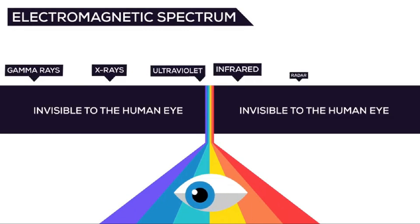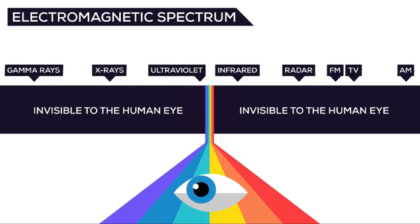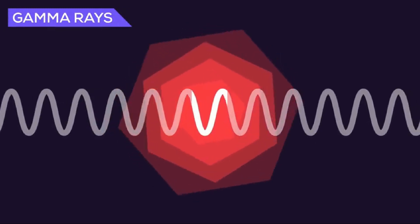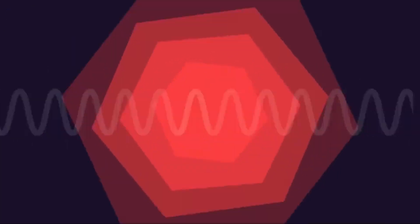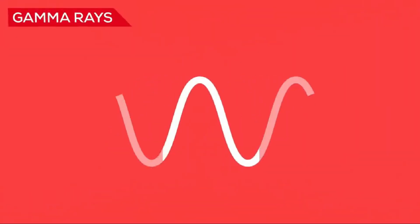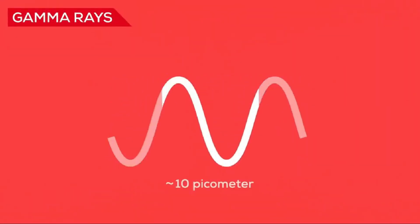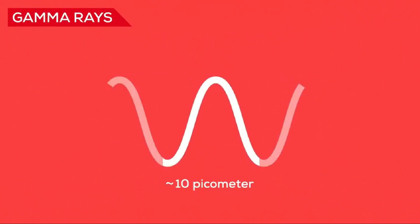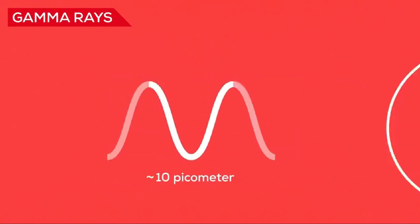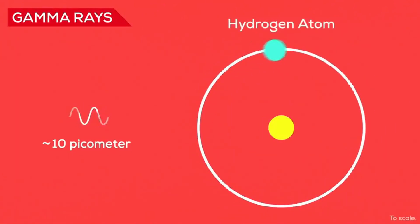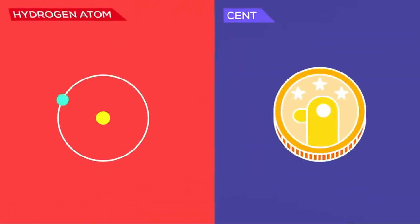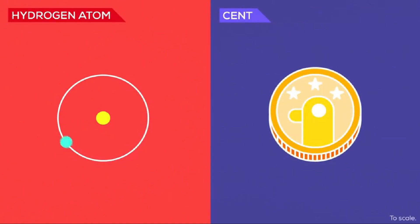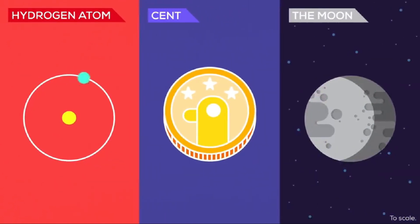Electromagnetic radiation consists of an enormous range of wavelengths and frequencies. Gamma rays have the smallest wavelengths because they're the highest energy photons, but most gamma rays are just under 10 picometers, which is still way smaller than a hydrogen atom. For reference, a hydrogen atom compared to a cent is about as big as a cent compared to the moon.